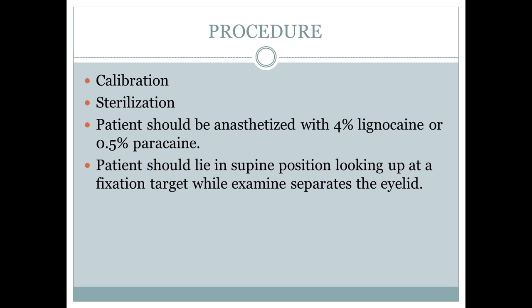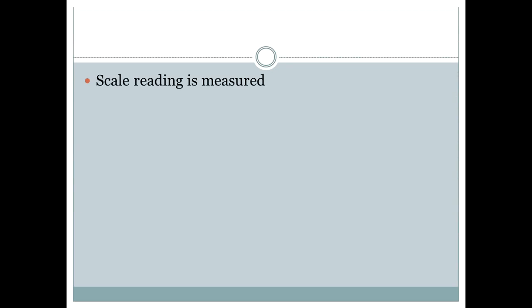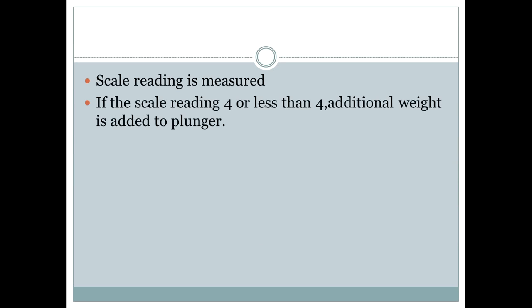Then you have to separate the patient's eyelid and place the footplate over the cornea. Measure the scale reading. If the scale reading shows 4 or less than 4, then you have to add the additional weights of 7.5 gram or 10 gram to the plunger and repeat the whole procedure again.